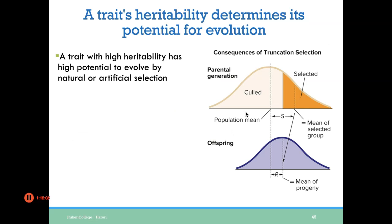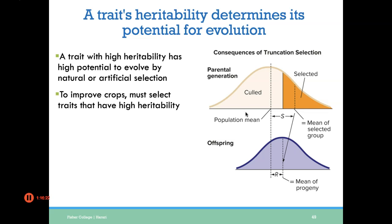Finally, a trait's heritability can determine its potential for evolution. A trait with high heritability has a lot of potential to evolve by natural selection or artificial selection. For example, if bean size is highly heritable, a farmer can select the largest beans and plant them, expecting they will produce even larger beans in the next generation.